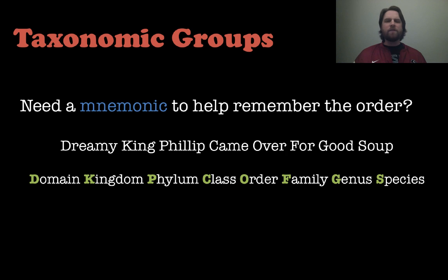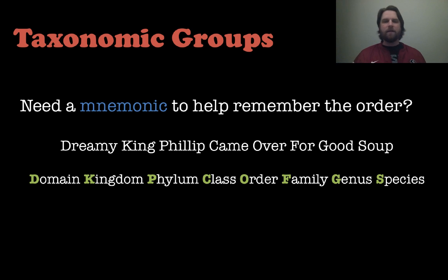If you need a mnemonic to help you remember the order — domain, kingdom, phylum, class, order, family, genus, species — you can think of: 'Dreamy King Philip came over for good soup.' D-K-P-C-O-F-G-S. That is how you can remember the order from least specific to most specific.